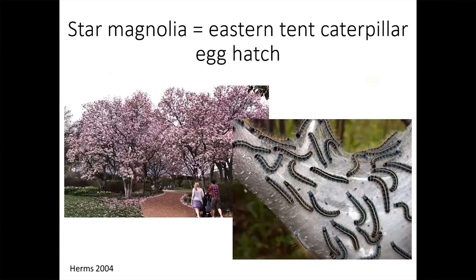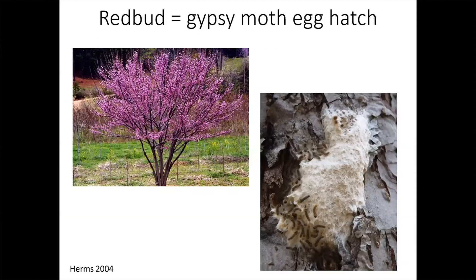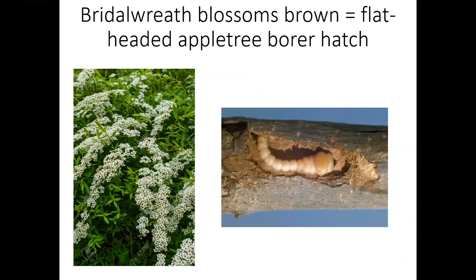Naturalists started figuring out correlations between plant phenology and insect activity, and we can use plants to predict when insects might be emerging. For example, when the star magnolia tree blooms, that's when eastern tent caterpillar eggs hatch and they become active in orchards. When red bud blooms, that's when gypsy moth eggs hatch and they're active in the forest. When bridal wreath blossoms start to turn brown and fall, that's when flathead apple tree borers hatch — a phenological event that coincides with plant phenology.